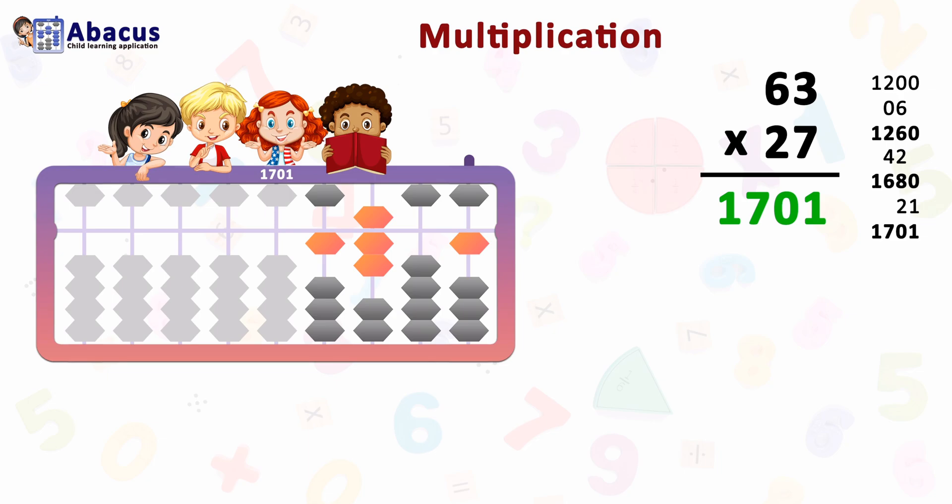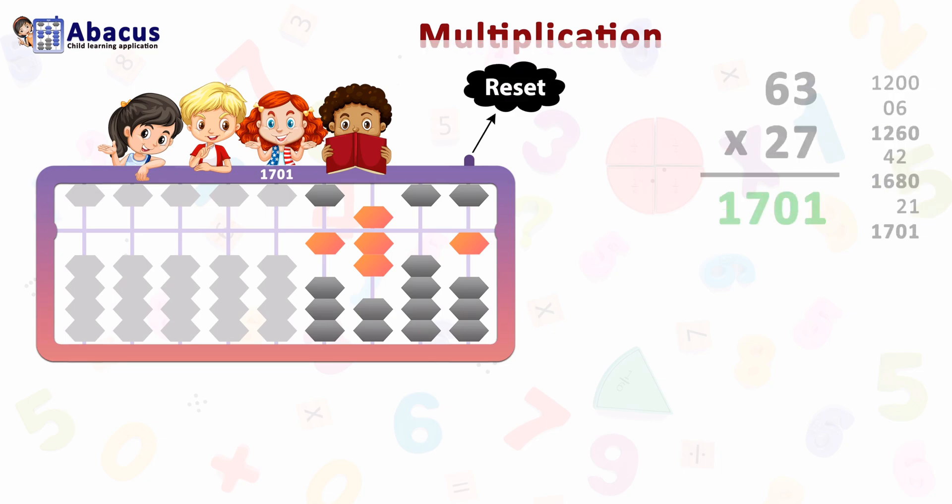We have completed all steps and the answer is 1701. In multiplication, we must memorize the times table from 1 to 9 and keep all the formulas in mind — this is most important in abacus. Let's see one more example. First, let's reset the abacus.